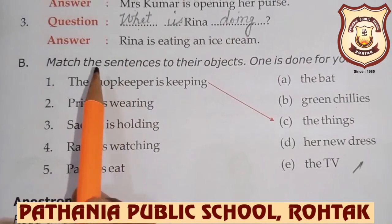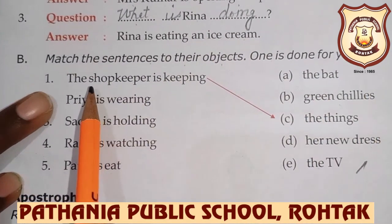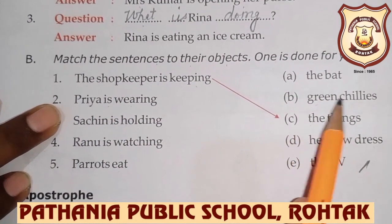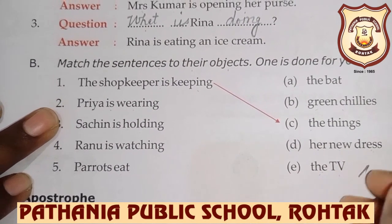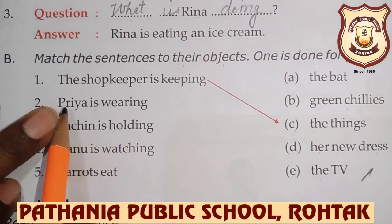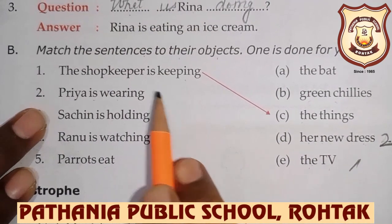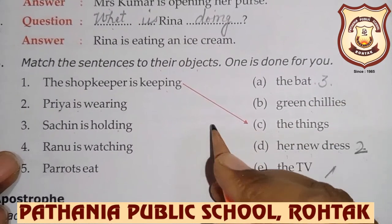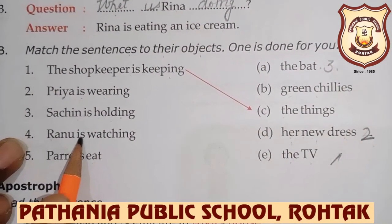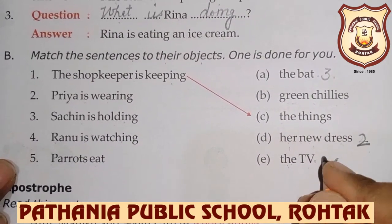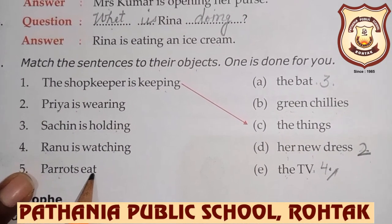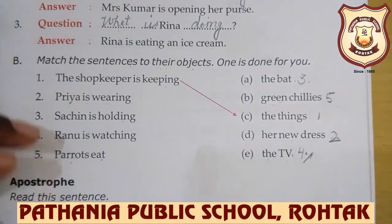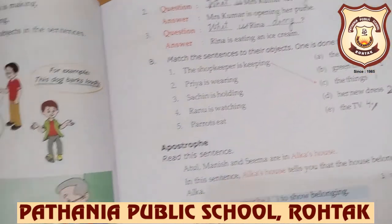Now we will do the next question: match the sentence with the object. One is done for you. The shopkeeper is keeping the things. Priya is wearing her new dress. Sachin is holding the bat. Rano is watching the TV. Parrots eat green chillies. So this is our question B — you have to do it in your book.